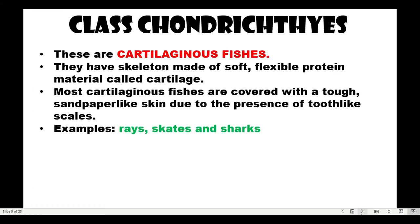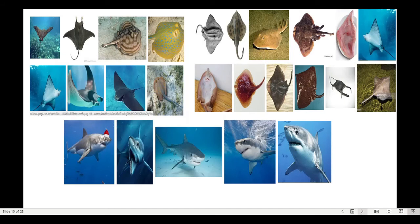Class Chondrichthyes — these are cartilaginous fishes. 'Chondry' means cartilage, so they have a skeleton made up of soft, flexible protein material called cartilage. Most cartilaginous fishes are covered with tough, sandpaper-like skin due to the presence of tooth-like scales. Examples are rays, skates, and sharks.